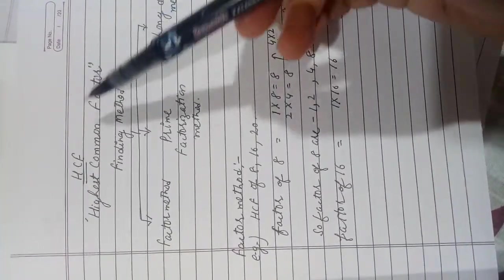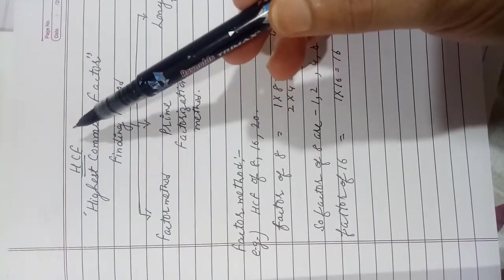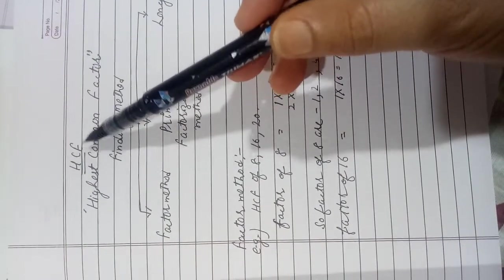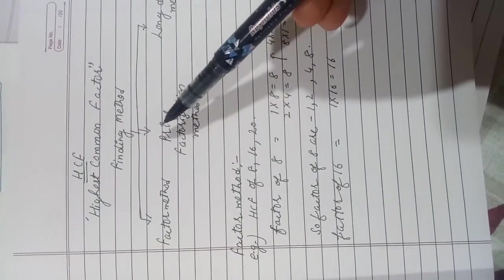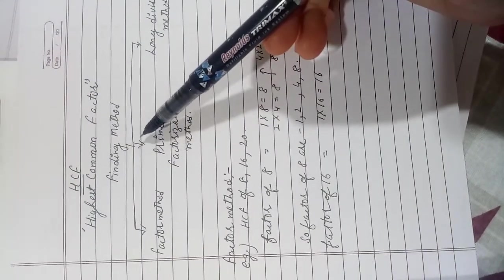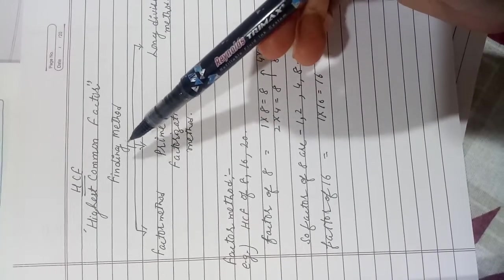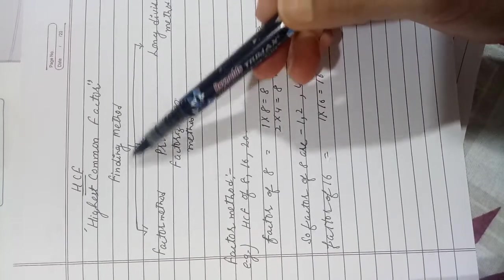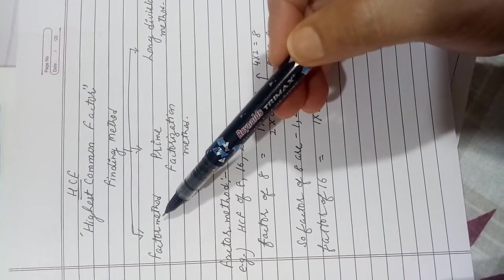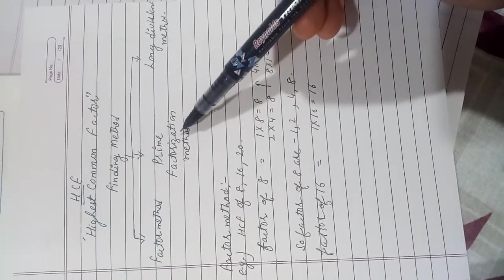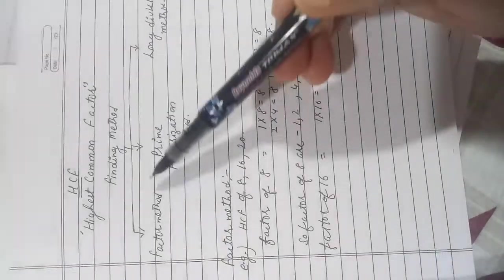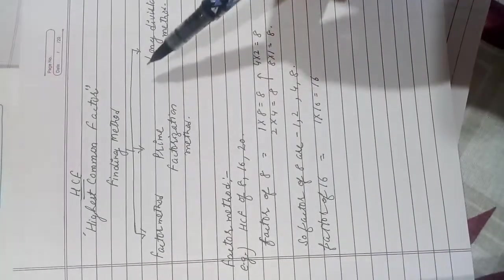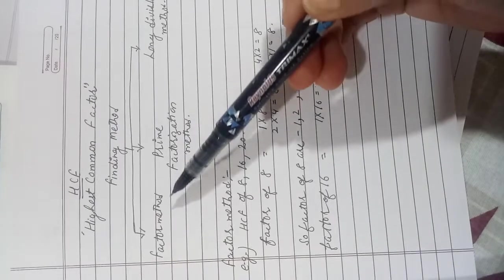Hello students, today we are going to start with a very important topic: how we can find the HCF — Highest Common Factor. We can find it using three methods: the factor method, the prime factorization method, and the long division method. We will do all the methods one by one.